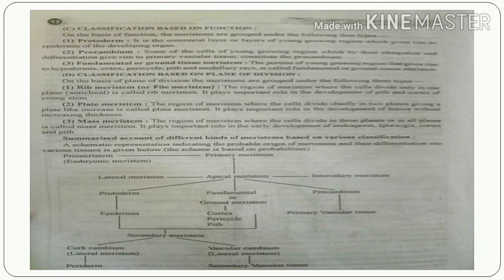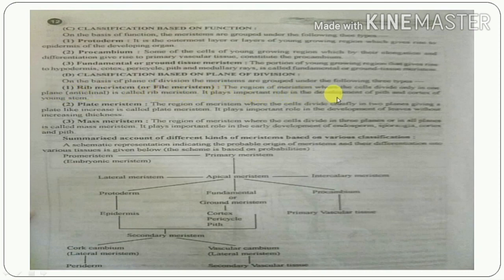The second is plate meristem. In plate meristem, cells divide in two planes and give rise to a plate-like structure. It plays an important role in the early development of endosperm and in the development of leaves without increasing thickness.